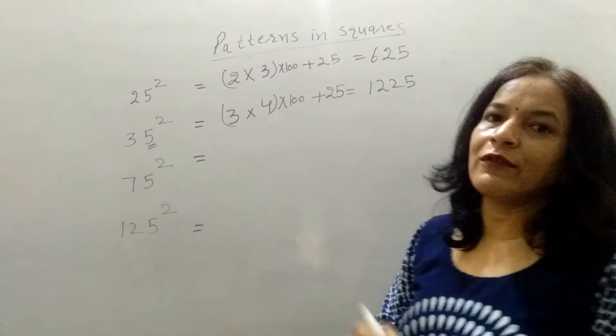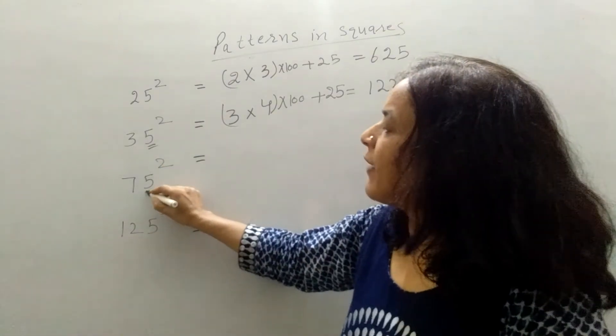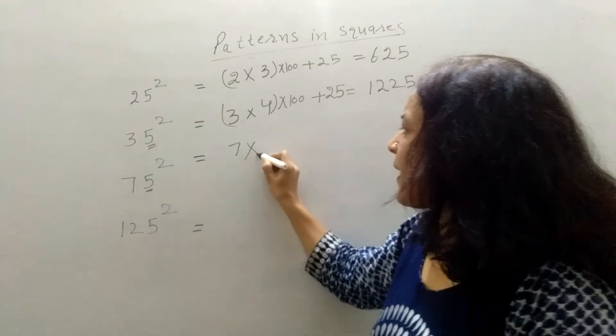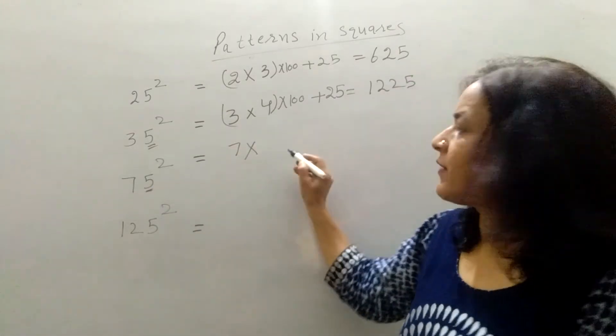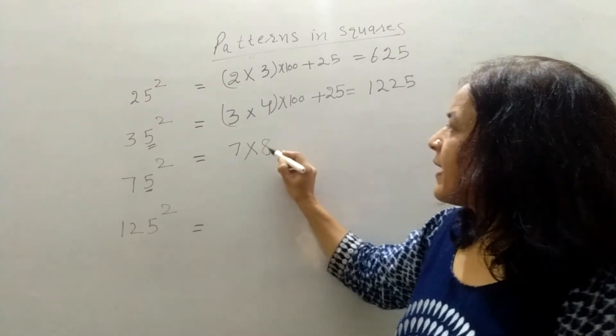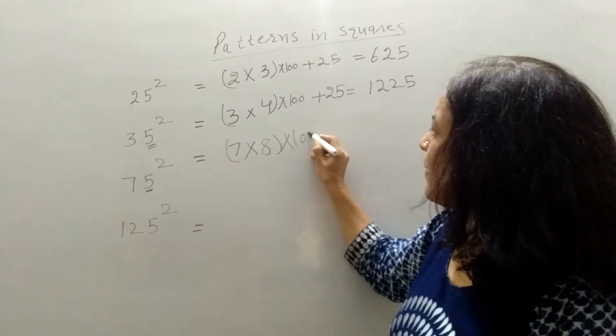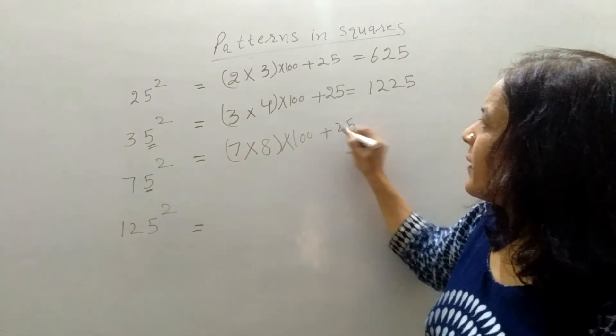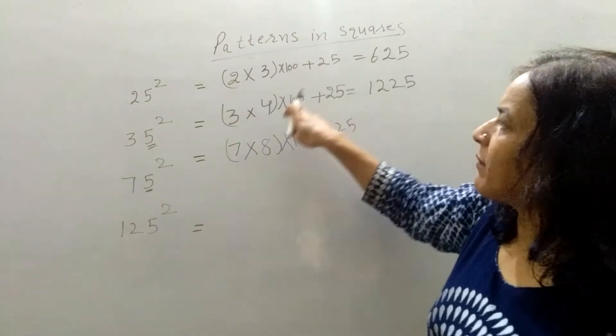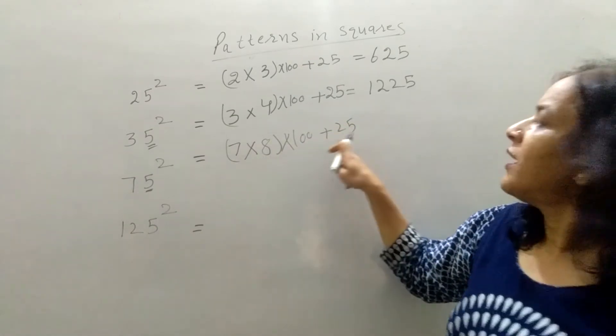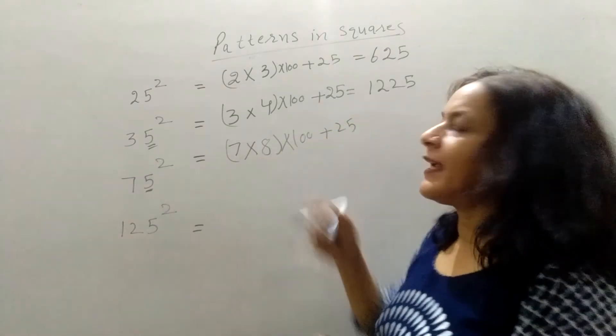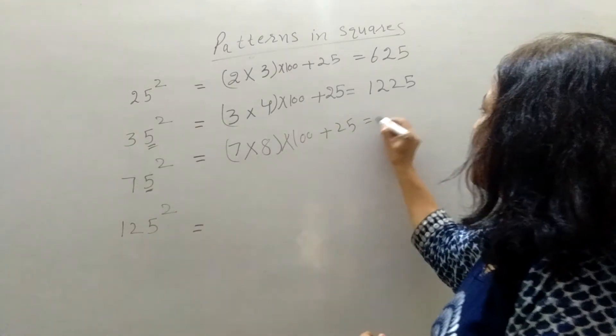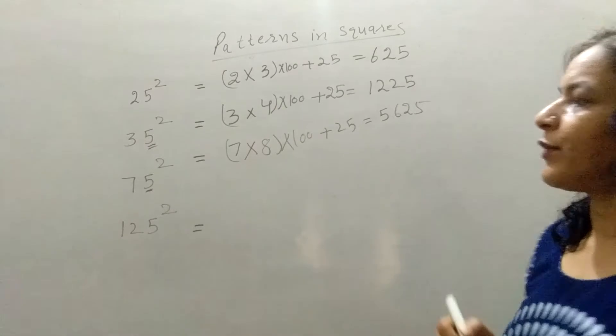Then 75 whole square. So 5 one side. It's 7. 7 multiply by successor of 7. What comes after 7? 8. 7 into 8. Multiply again by 100 plus 25. It is common. Multiply by 100 plus 25. So 7, 8. 56. 5600 plus 25. It is 5625.